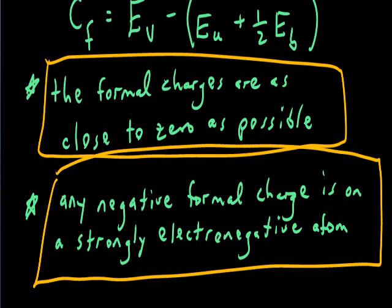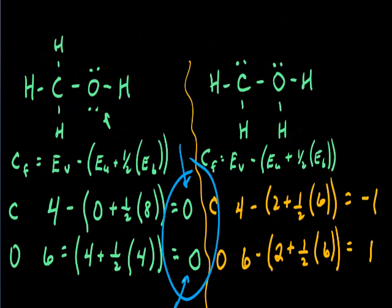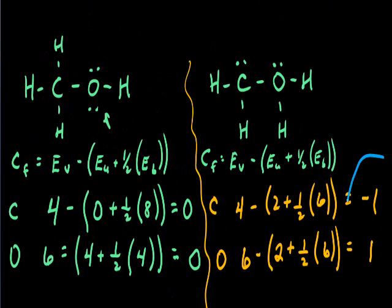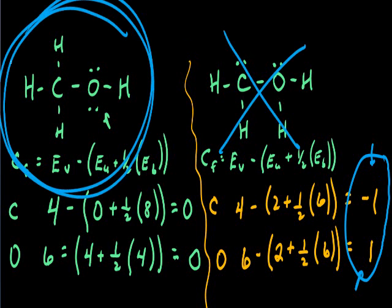In our structure on the left, both the carbon and oxygen atoms have formal charges calculated to be zero — this is a good sign, as that's as close to zero as we can get. Meanwhile, the structure on the right, our carbon came up with a negative one value and the oxygen a positive one for formal charge. Since these are further away from zero, this tells us the Lewis structure on the right is less likely of the two. Our Lewis structure on the left is, of these two, the one more likely to be the real structure. This is the purpose and function of formal charge calculations.